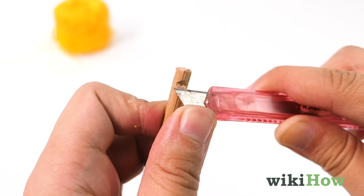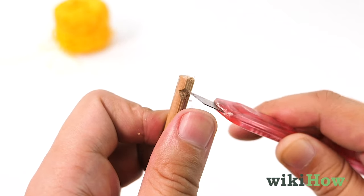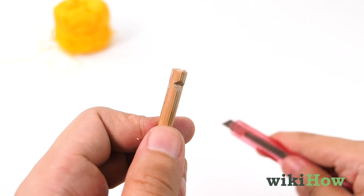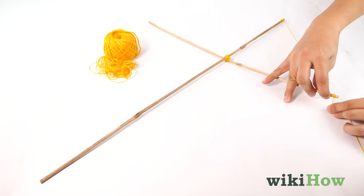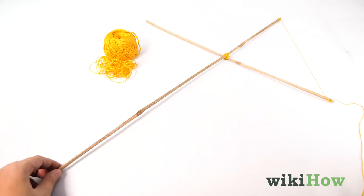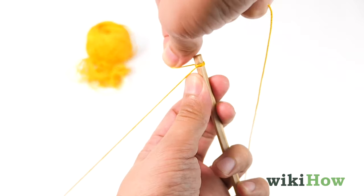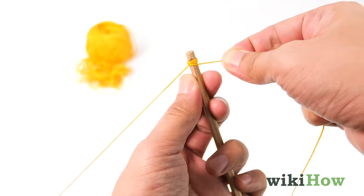Next, cut a notch in the end of each dowel using a small knife. Run a long length of string around the ends of the dowels to connect the four ends. Use the notches you cut to keep the string in place.